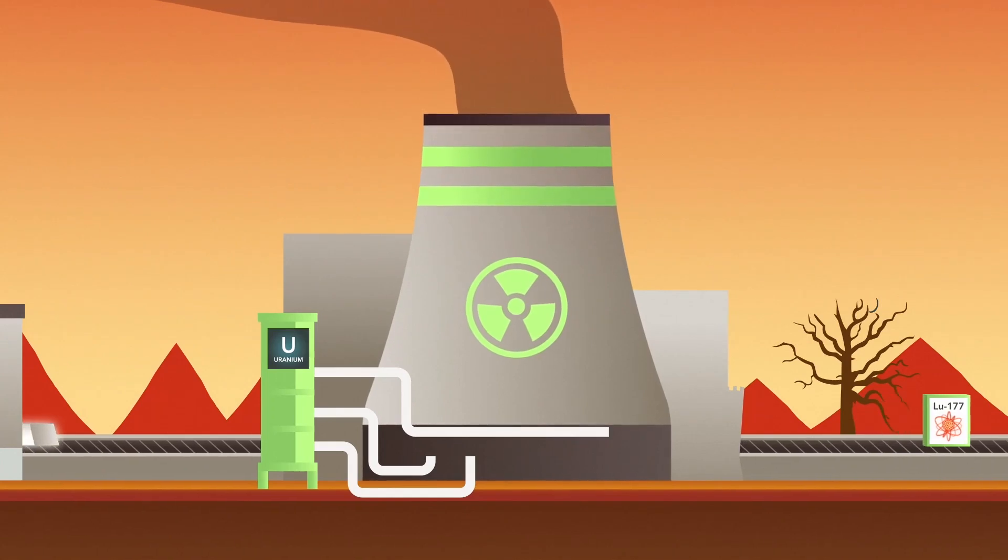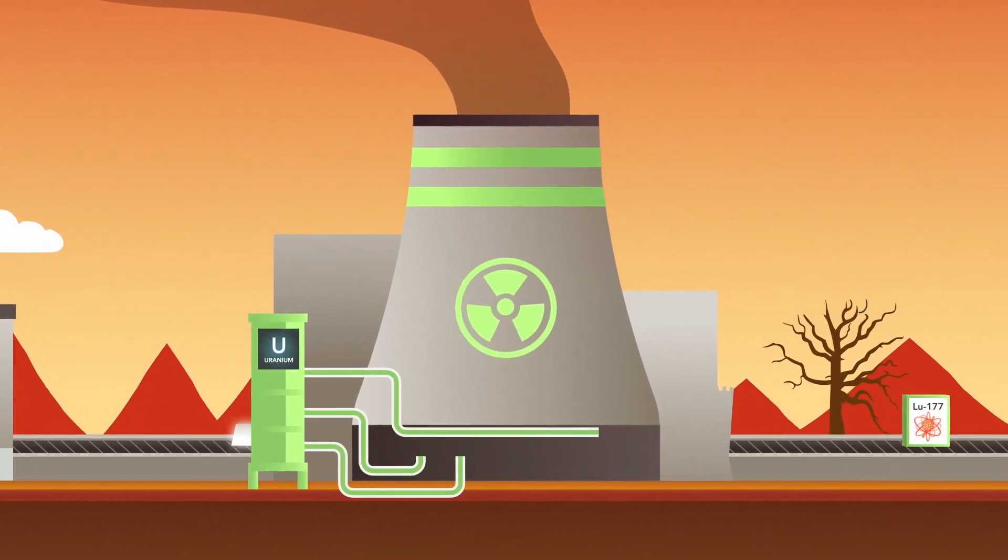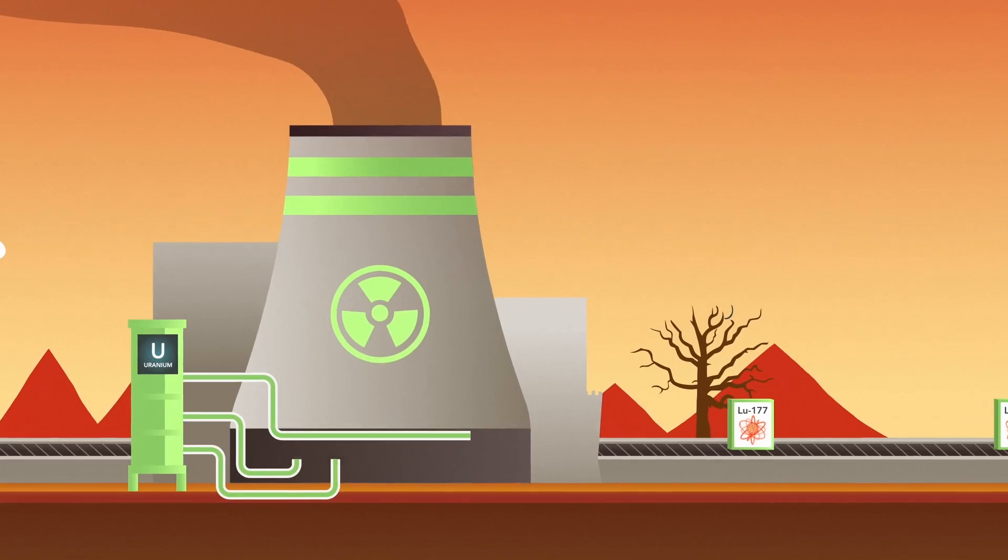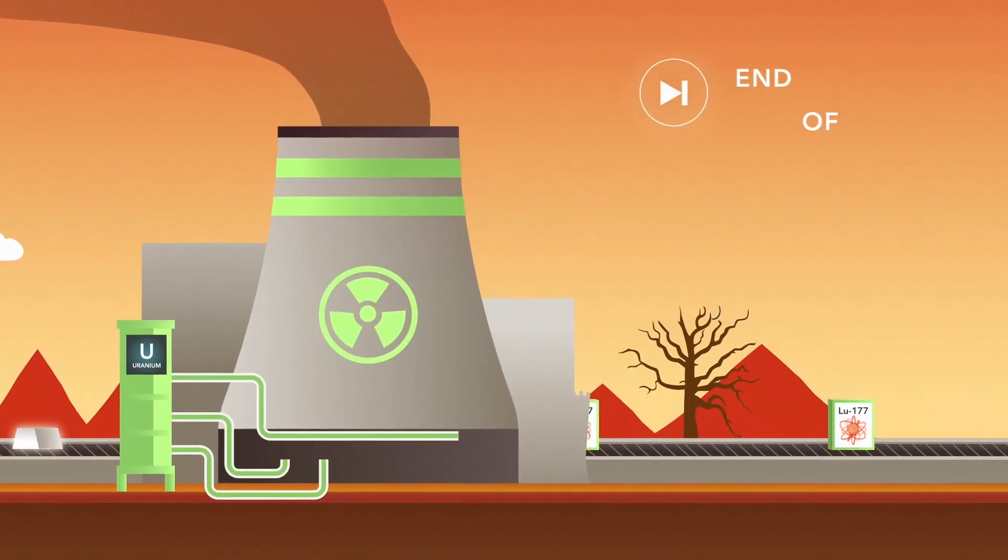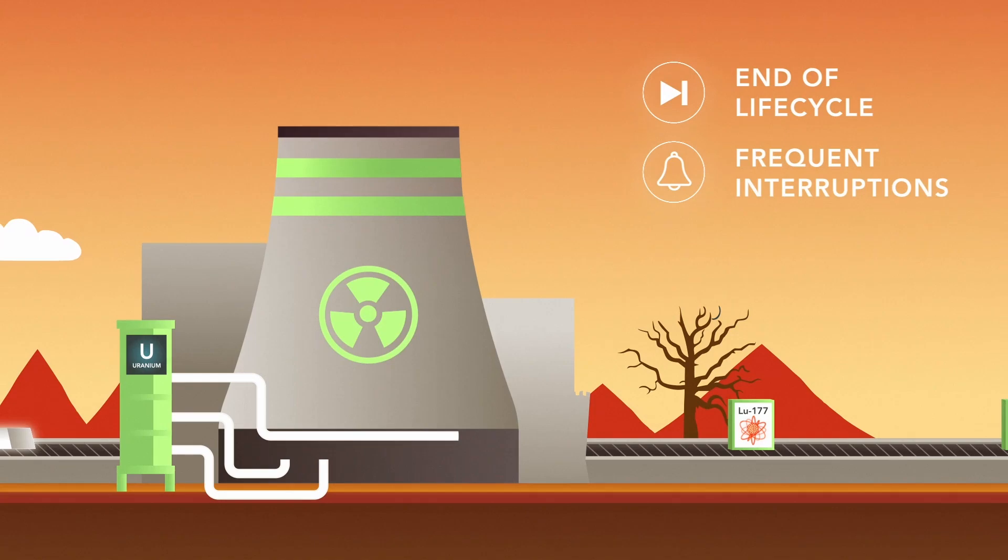The purified Ytterbium-176 must then be irradiated in a specialized nuclear reactor that is capable of transforming Ytterbium-176 into Lutetium-177. There are very few of these specialized nuclear reactors in the world, and many of them are coming towards the end of their intended life cycle, leading to frequent unplanned and prolonged maintenance shutdowns.